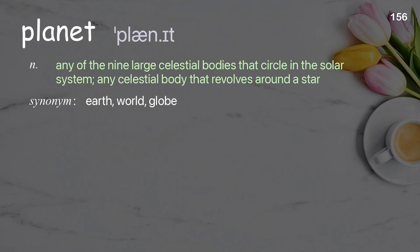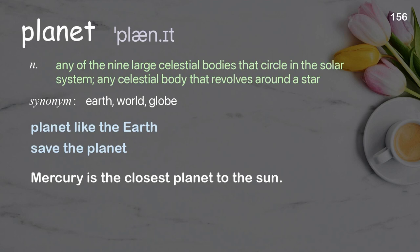Planet: any of the nine large celestial bodies that circle in the solar system; any celestial body that revolves around a star. Examples: planet like the earth; save the planet; Mercury is the closest planet to the sun.